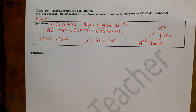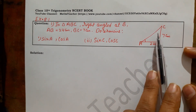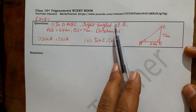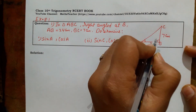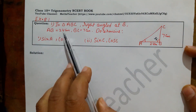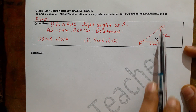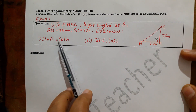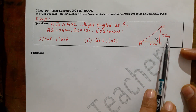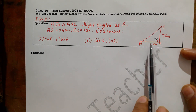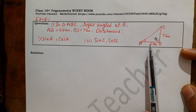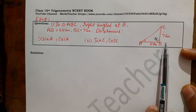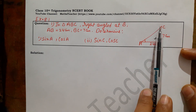So first we have this triangle. How much is angle B? Right angled at B means angle B is 90 degrees. AB is given as 24 cm, BC is given as 7 cm. To complete the triangle we need to know the length of all three sides. The base length is 24 cm and the perpendicular length is 7 cm, so we need to find the hypotenuse.